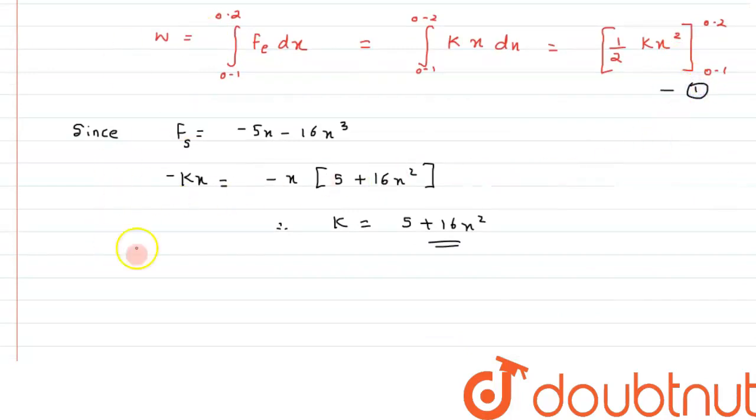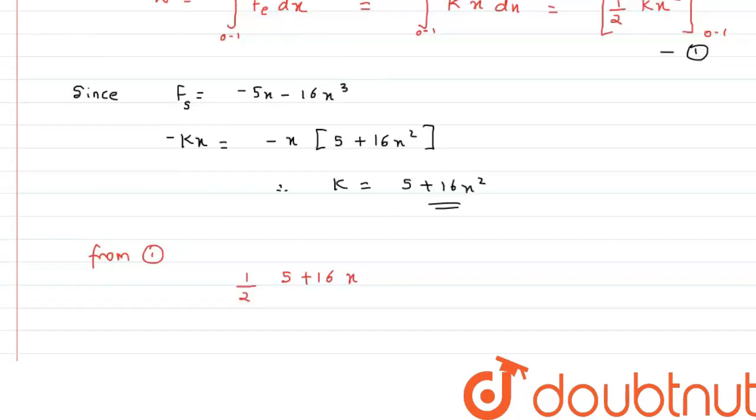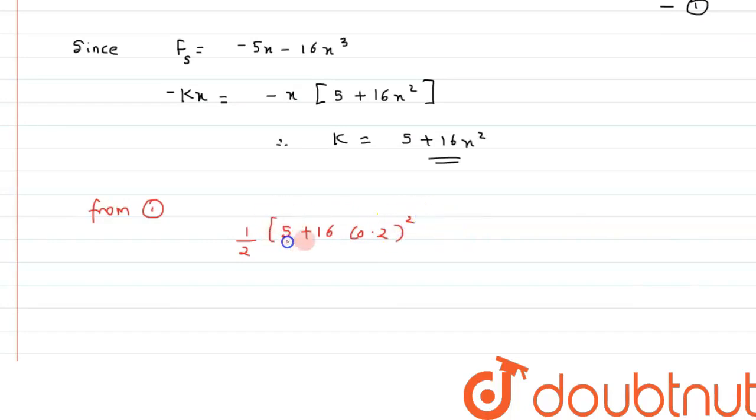From equation 1, we can say, we have to just put the values over here and we will get the final answer. We can write half into k can be written as 5 plus 16. First, it would be for the upper limit. That is, we can say it has 0.2 square. This is the value of k and this has to be multiplied with 0.2 square.